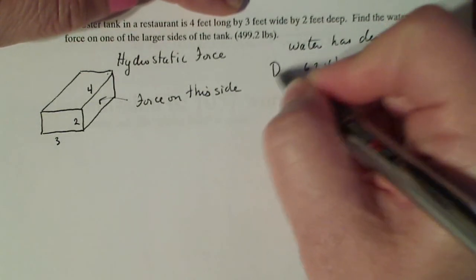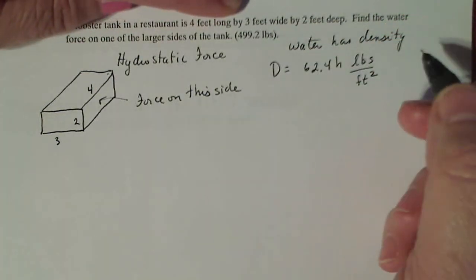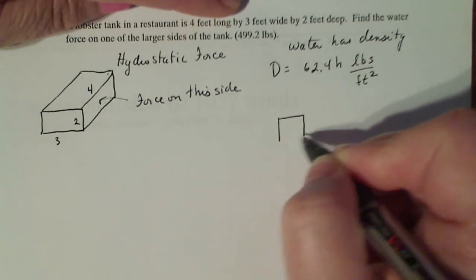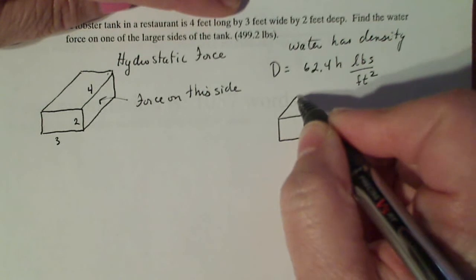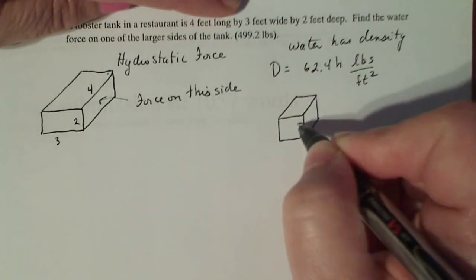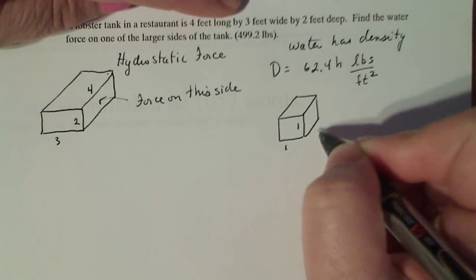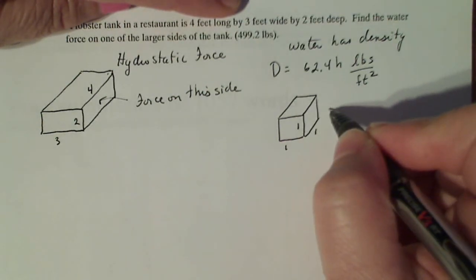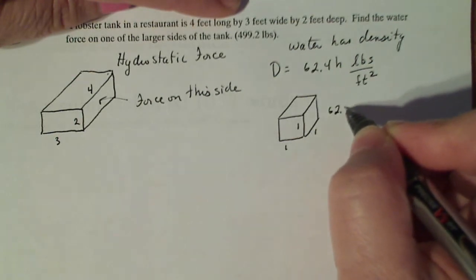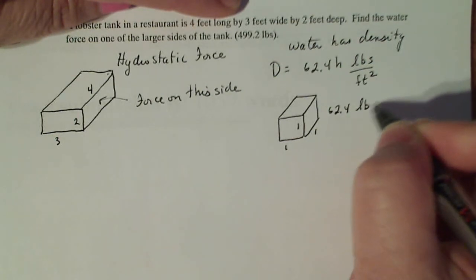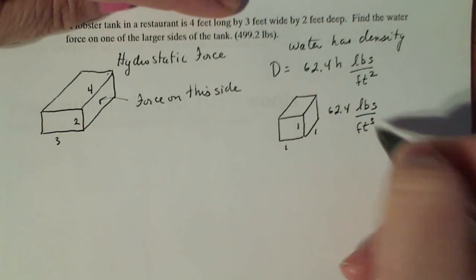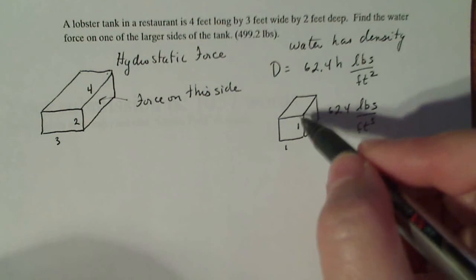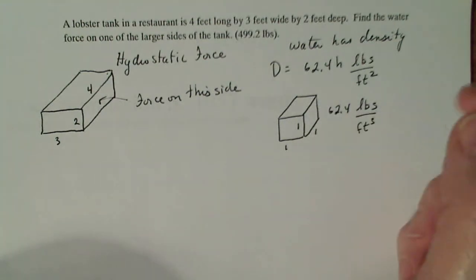So we know water has density of 62.4 H pounds per square foot. Now, I'm going to use D for density. Now, what does that mean? So let's say I have a cubic size cube. So each side is one foot, one foot, one foot. And I fill it with water. This thing will weigh 62.4 pounds. Water weighs 62.4 pounds per cubic foot. So that means that the water poured into this thing is going to weigh 62.4 pounds.